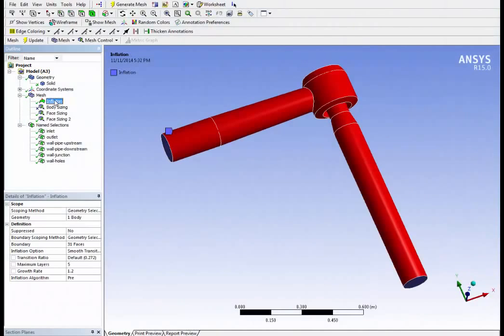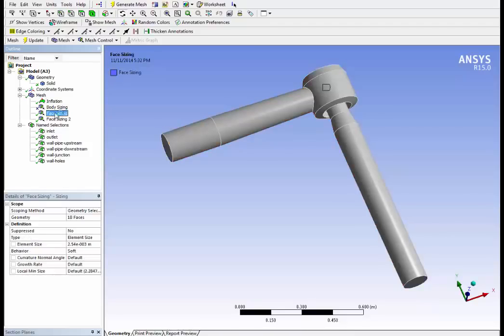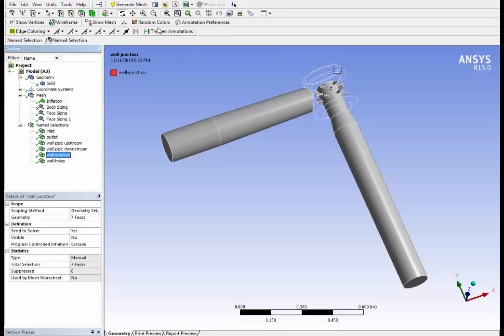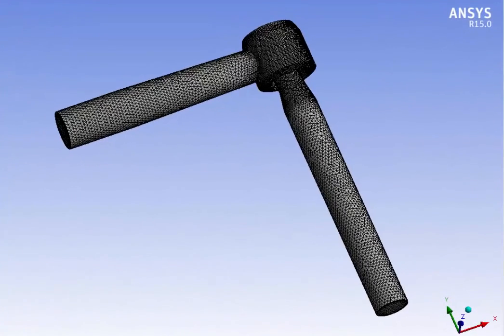Next I wanted to show you how we do the mesh. We put an inflation on the wall of the pipe, obviously to capture the flow boundary layer. And then I wanted to show you that we did a special face sizing on the holes that we saw previously. And what I'm going to do is hide some faces so you can see the location of the special size function.